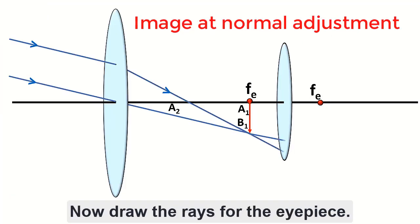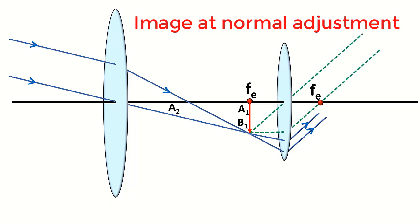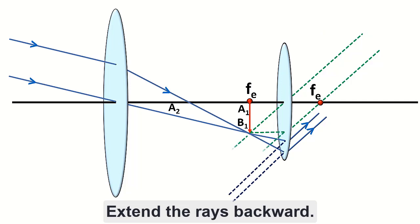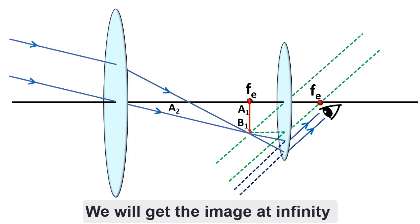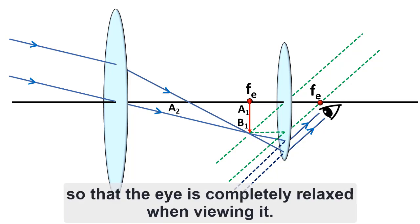Now draw the rays for the eyepiece. Extend the rays backward, they will not meet. We will get the image at infinity so that the eye is completely relaxed when viewing it.